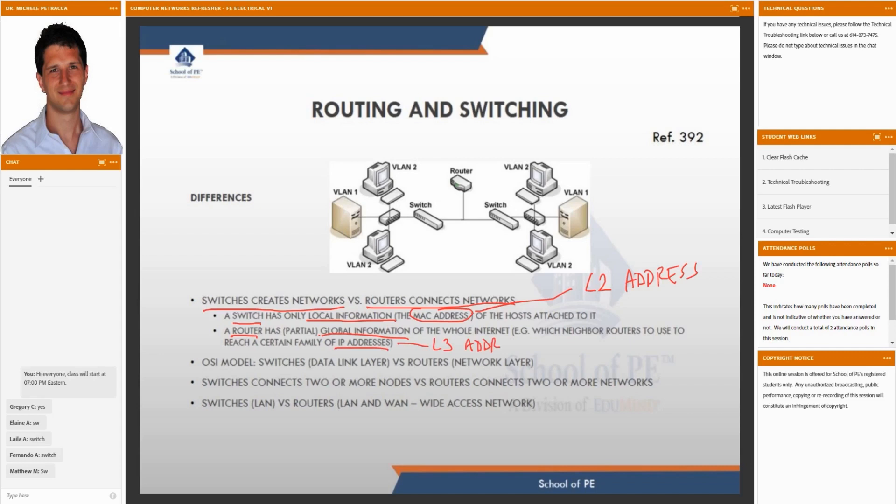If you think in terms of OSI model, which we are going to introduce in a bit, data link layer, which is L2, is for the switch, network layer, which is L3, is for the router.